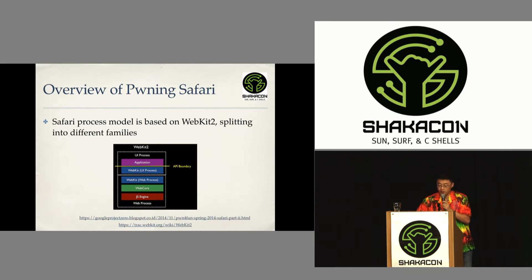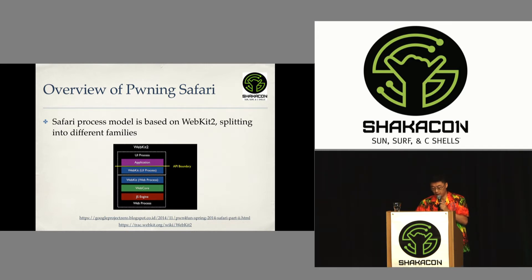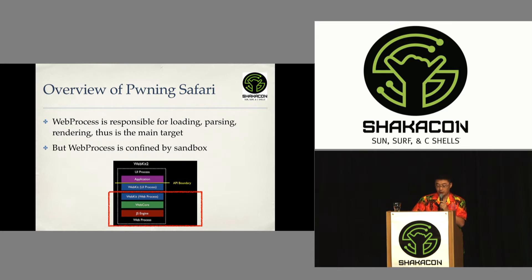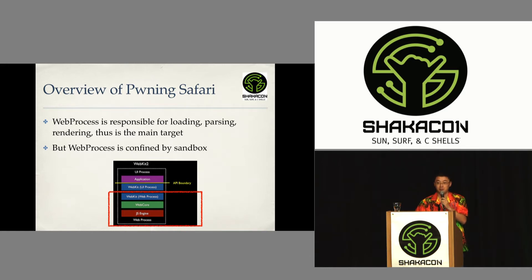Safari's process model is based on WebKit2. That means the whole Safari is split into different processes. For example, there is a process called WebContent. For the process model, you can refer to the two links on the page for more details. WebProcess is responsible for loading, parsing, and rendering the web page — meaning it's more vulnerable because it has more functionality. The more functionalities you have, the more likely you have bugs. So WebProcess is the main target to find remote code execution bugs.